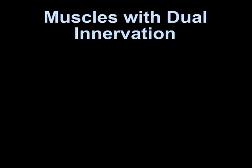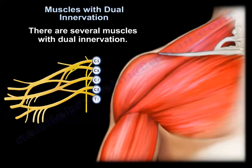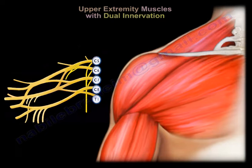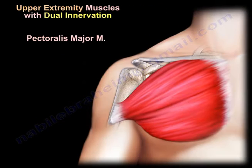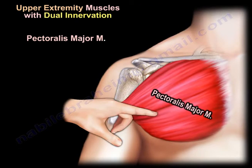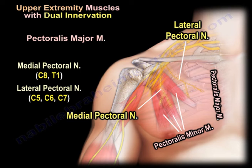There are several muscles with dual innervation. In the upper extremity, these are the most common muscles with dual innervation. The pectoralis major muscle receives its innervation from the medial and lateral pectoral nerves, as you can see here in this diagram.